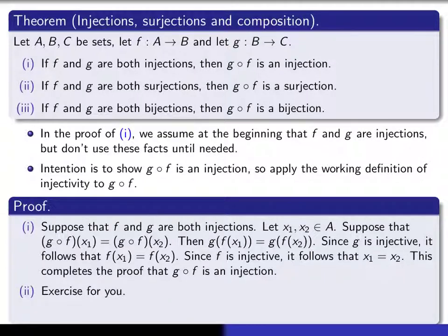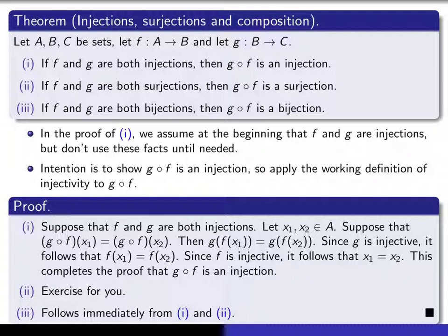I'll leave the proof for surjectivity as an exercise. You'll follow a similar pattern: assume f and g are surjective, directly apply the working definition of surjection to f composed with g, and prove it. Part 3 is then immediate from parts 1 and 2, because f composed with g being a bijection simply means it is both an injection and a surjection. So that completes the proof of this theorem.